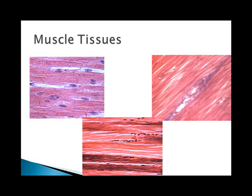Cardiac muscle tissue is an unusual tissue because it is involuntary but it is striated — it does have stripes. You can recognize cardiac tissue because it has branches and those straight up-and-down lines throughout the tissue called intercalated discs, which help the muscle to contract as a single unit.